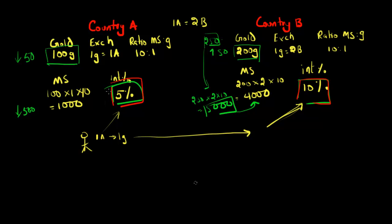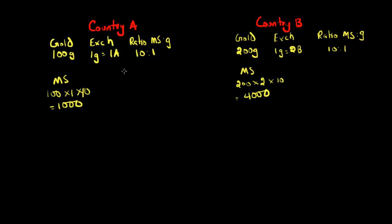So now we're going to talk about some of the advantages of being on the gold standard. The two countries — country A and country B — have to have their interest rates be relatively similar. We're going to assume that the interest rate in country A is 5% and the interest rate in country B is also 5%.